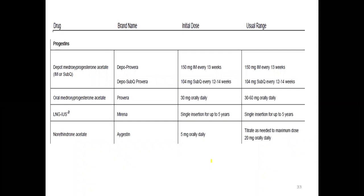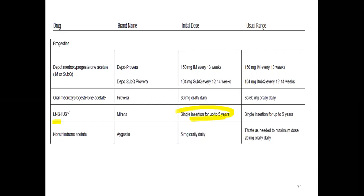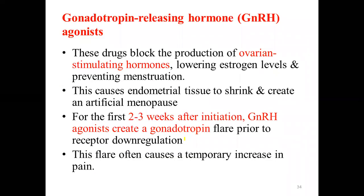Depo-Provera 150 mg is given every three months. We also have the levonorgestrel-releasing intrauterine device, which can be placed inside the uterus and lasts every five years with monitoring. We also have norethindrone oral preparation at an initial dose of 5 mg orally, adjusted accordingly.